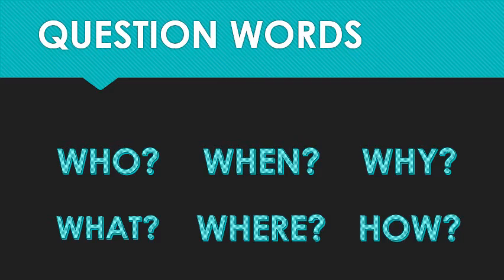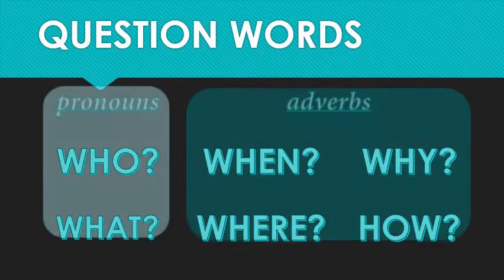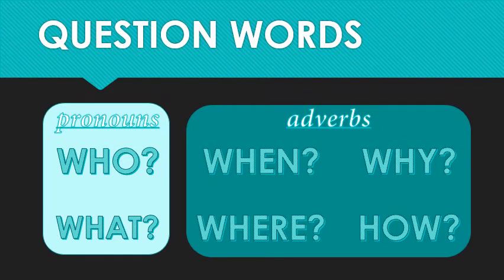Did you know that the question words are actually different parts of speech? Who and what are pronouns. When, where, why, and how are adverbs. This makes a difference in how they're used in a sentence. Who and what, which we'll spend more time talking about next week, represent either the subject, object, or maybe an object of a preposition.